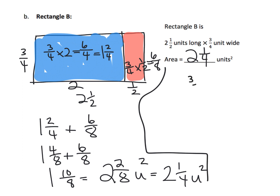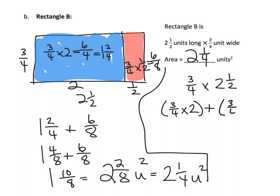Really what we did is three fourths times two and a half, which equals these two multiplication problems: three fourths times two plus three fourths times one half. That's where we get six fourths plus three eighths. You can continue from there, and you'll get that same answer of two and a quarter.